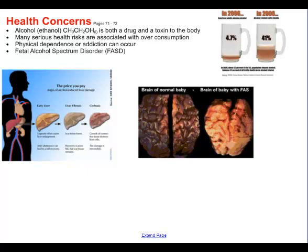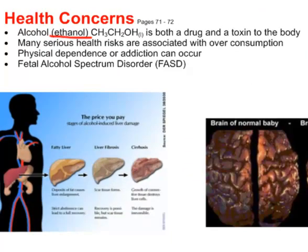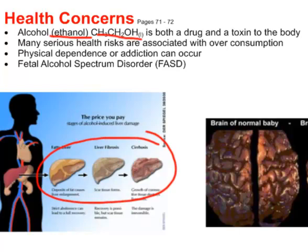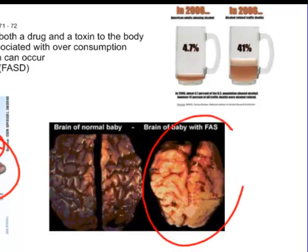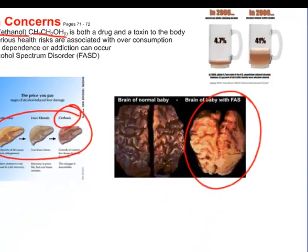Some health concerns — as you've learned in health class, alcohol is addictive, a drug and a toxin to the body. Its IUPAC name is ethanol. There's a wide range of health risks associated with overconsumption of alcohol, not the least of which is damage to the liver, which can lead to cirrhosis. If pregnant women consume alcohol, they can end up with a child who has FASD — fetal alcohol spectrum disorder — causing brain damage that will make it very hard for those children to succeed in school or in life.